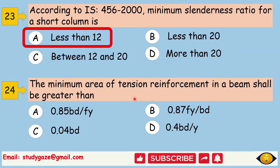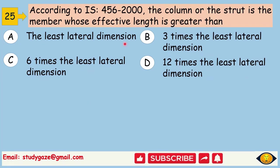The minimum area of tension reinforcement in a beam shall be greater than. Answer is 0.87FY by BD. According to IS 456-2000, the column or the strut is the member whose effective length is greater than. Answer is 3 times the least lateral dimension.